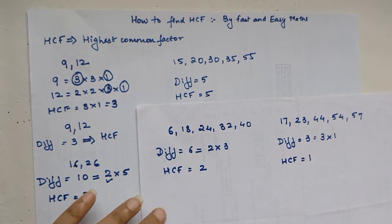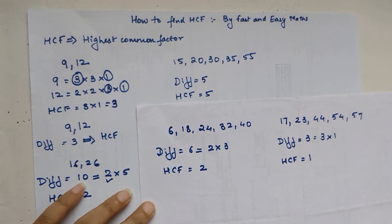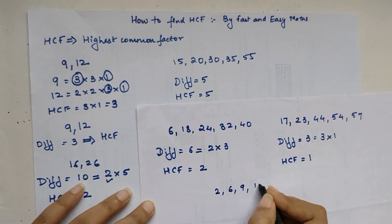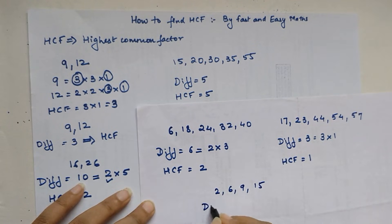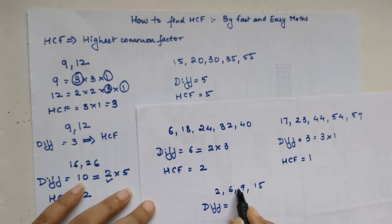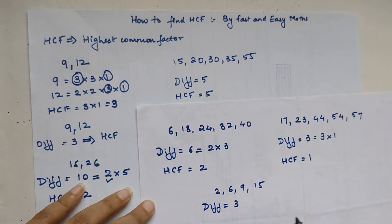Let me show one more example: the given numbers are 2, 6, 9, and 15. Let us find the differences — the difference between 2 and 6 is 4, and between 6 and 9 is 3, which is the least difference. So let us try with 3.